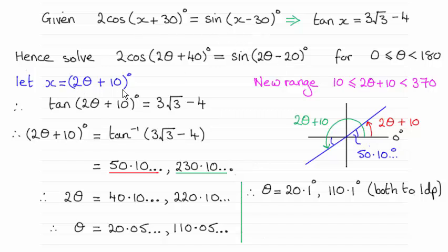So if we let x equal 2θ plus 10 degrees, then we know that the tan of x from up here which is 2θ plus 10 degrees must equal 3√3 minus 4.